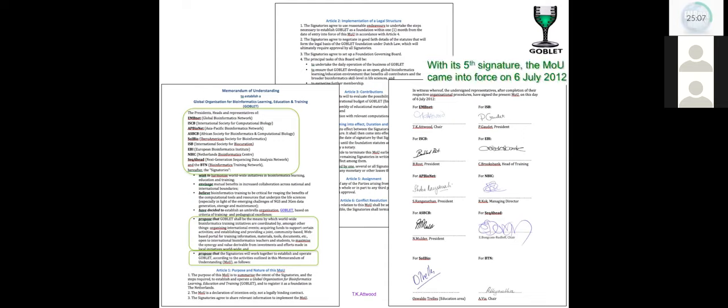The Signatories agreed to work together to establish and operate GOBLET according to the activities outlined in the MOU. That MOU came into force on the 6th of July with its 5th signature. And it was eventually signed by all the representatives. So as you can see, we really did move very, very quickly. This was only four or five weeks after that meeting in Uppsala.